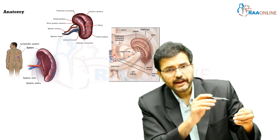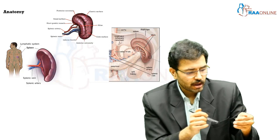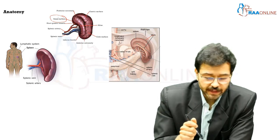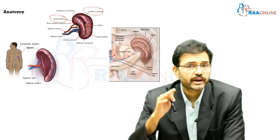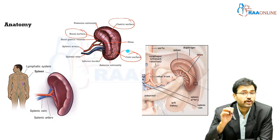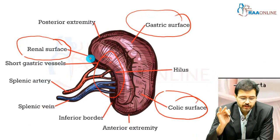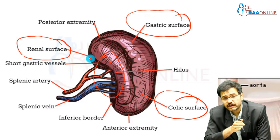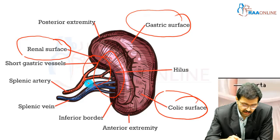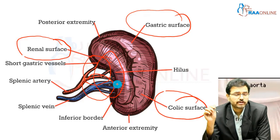The inner surface of the spleen has certain specific areas. It has what is called a renal surface, wherein it comes in contact with the left kidney. It has a gastric surface, wherein it comes in contact with the stomach. It has a colic surface, wherein it comes in contact with the splenic flexure of the colon. The hilum is also located in this area — it is the area where the splenic artery and vein enter the spleen. One very important point is that the splenic artery and vein start bifurcating before entering the splenic parenchyma.